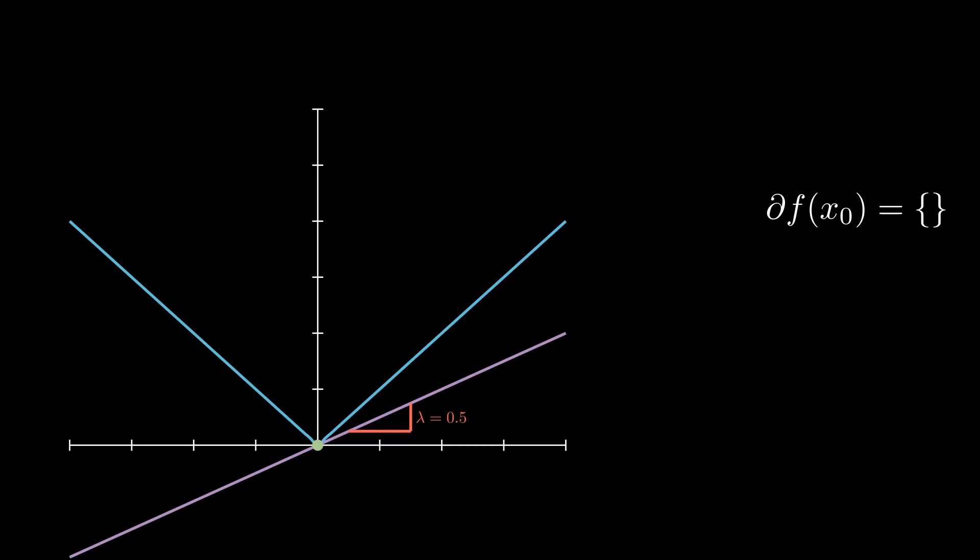We will call this slope value lambda. And the condition for one of these tangents is that all of the function values should be above the tangent line.